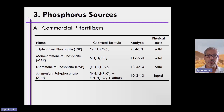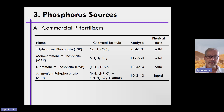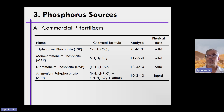Types of commercial inorganic phosphorus fertilizers on the market today are all over the place, but there are four main types of phosphorus fertilizers that you could purchase, and these are bulk. As you see on your screen, there is triple super phosphate.